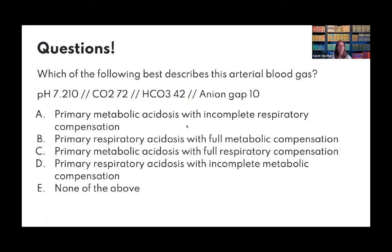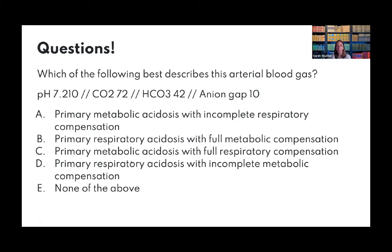Practice question 3: pH 7.2, CO2 72, bicarb 42, anion gap 10. The answer is D — primary respiratory acidosis with incomplete metabolic compensation. pH is low, CO2 is high and related, so it's a primary respiratory acidosis. Bicarb is elevated showing the kidneys are compensating, but the pH is still abnormal so compensation is incomplete.